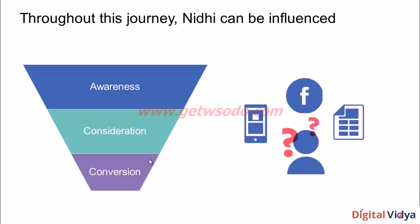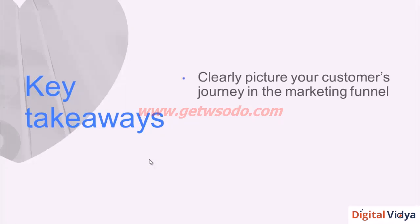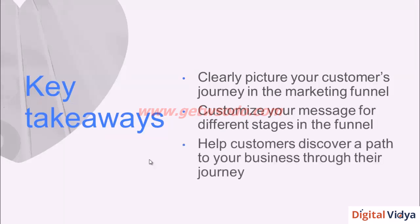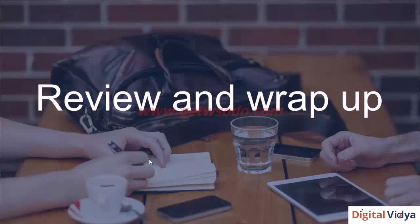Throughout this journey, you as a marketer can influence customers. At every stage of their purchase journey, you would try to influence them with tailored messaging and communication. Key takeaways from this section on the marketing funnel: clearly picture your customer's journey, write it down, and think through the entire decision-making process your customer goes through. Then think through what messaging and communication you'll use at each stage of the funnel to connect with them and influence them to come to your business and buy.